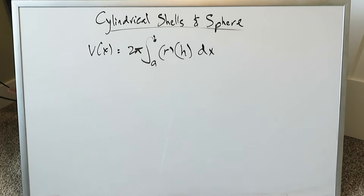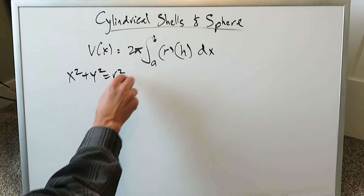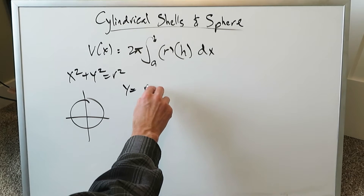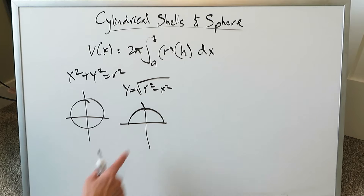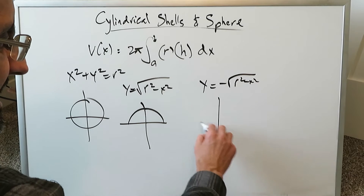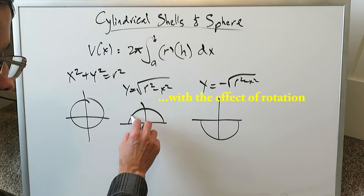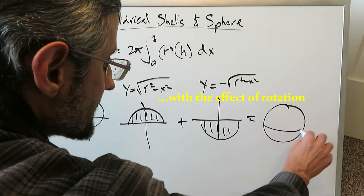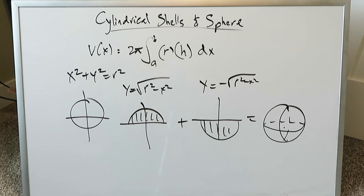Here we're focusing in on a sphere. If you take the equation of a unit circle, x² + y² = r², you know it represents a circle, but this is not a function. If you solve for y, you get y = √(r² − x²), which converts it into a function. If you put a minus before it, you have y = −√(r² − x²), which is the exact reflection across the x-axis. Doing the volume determination of both and adding them gives a three-dimensional sphere.